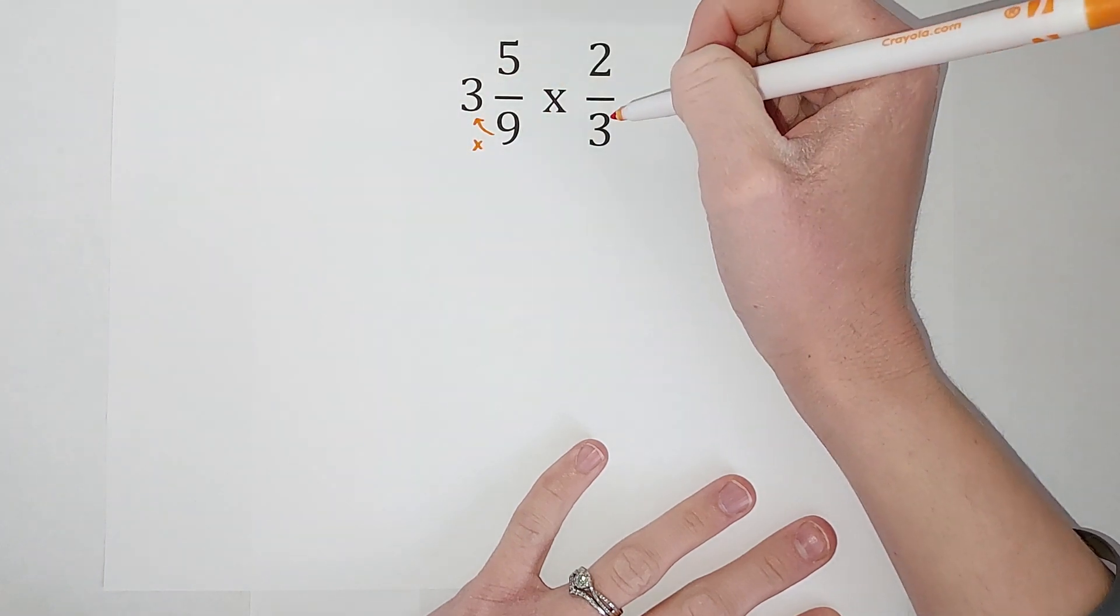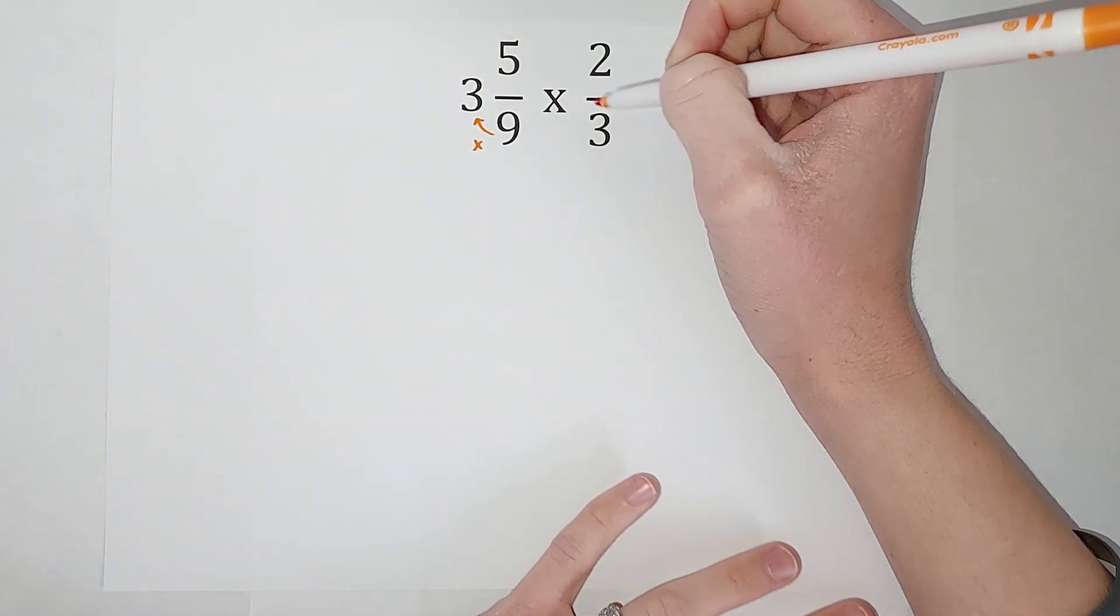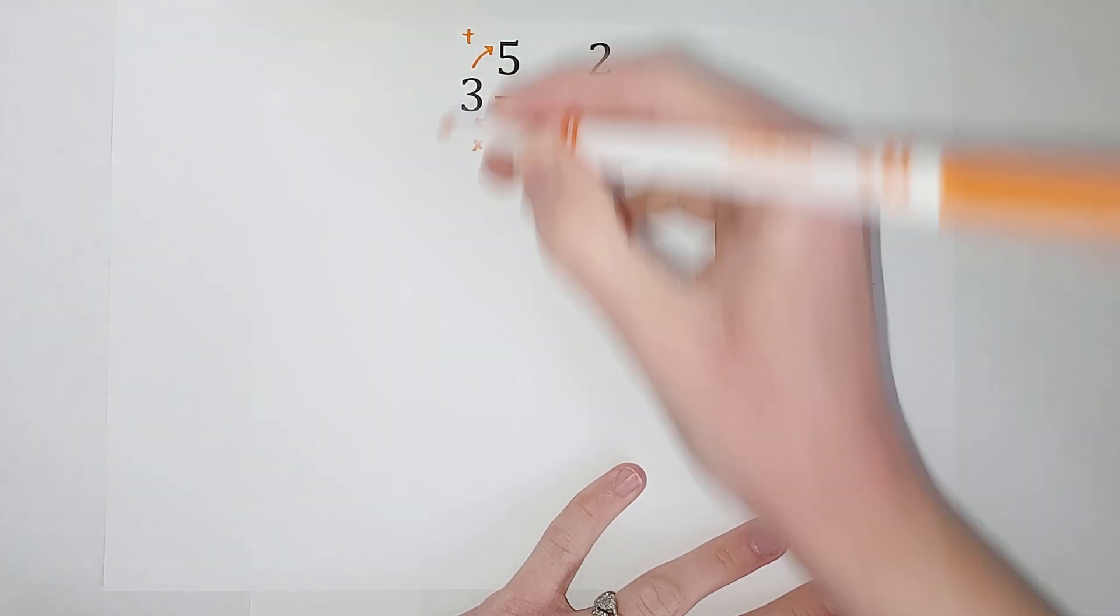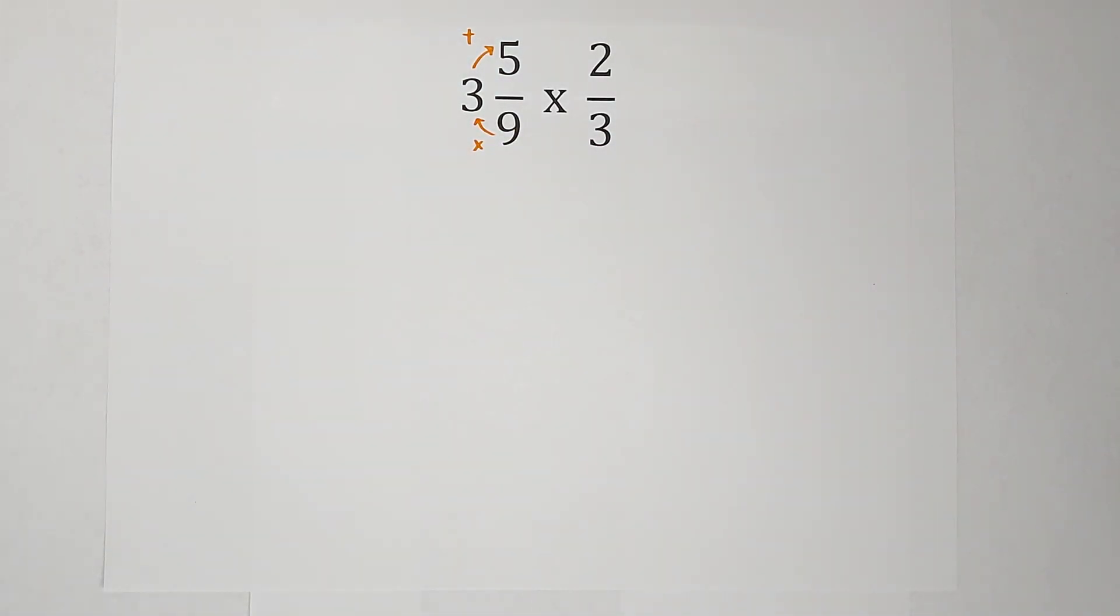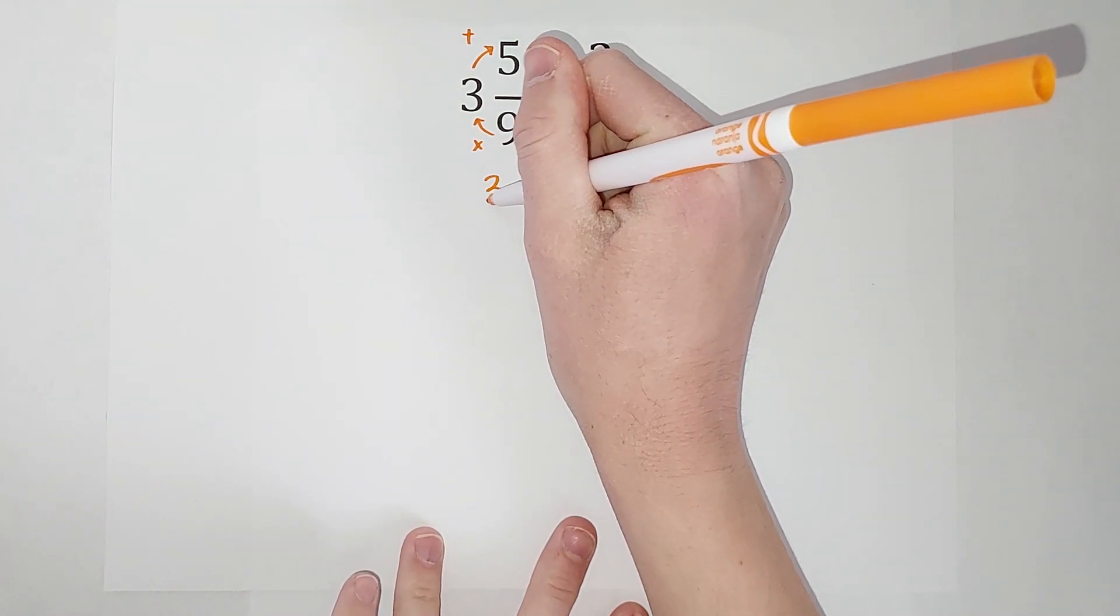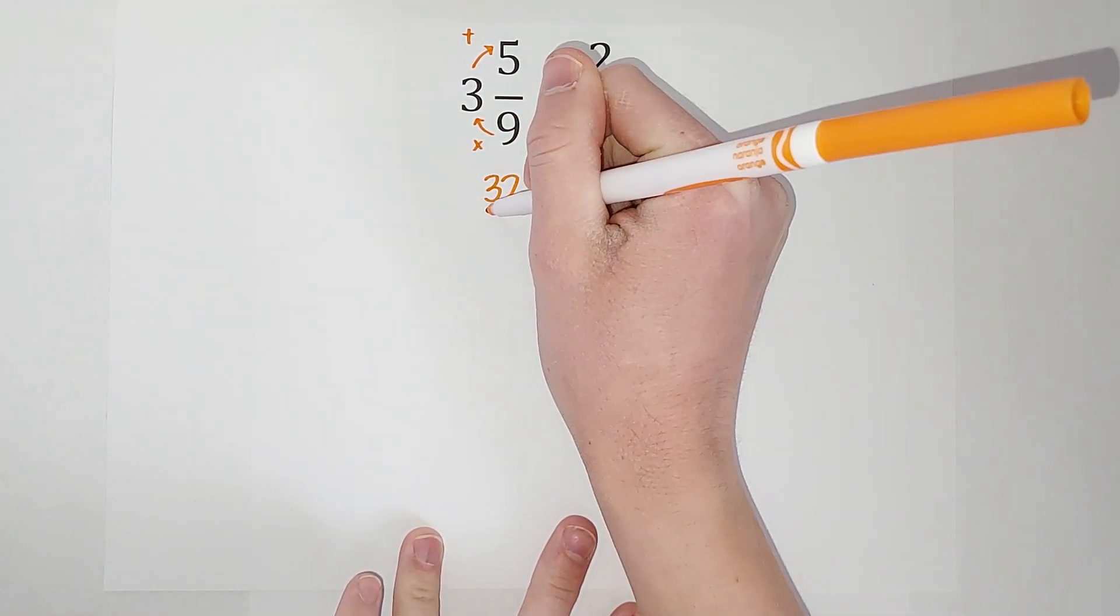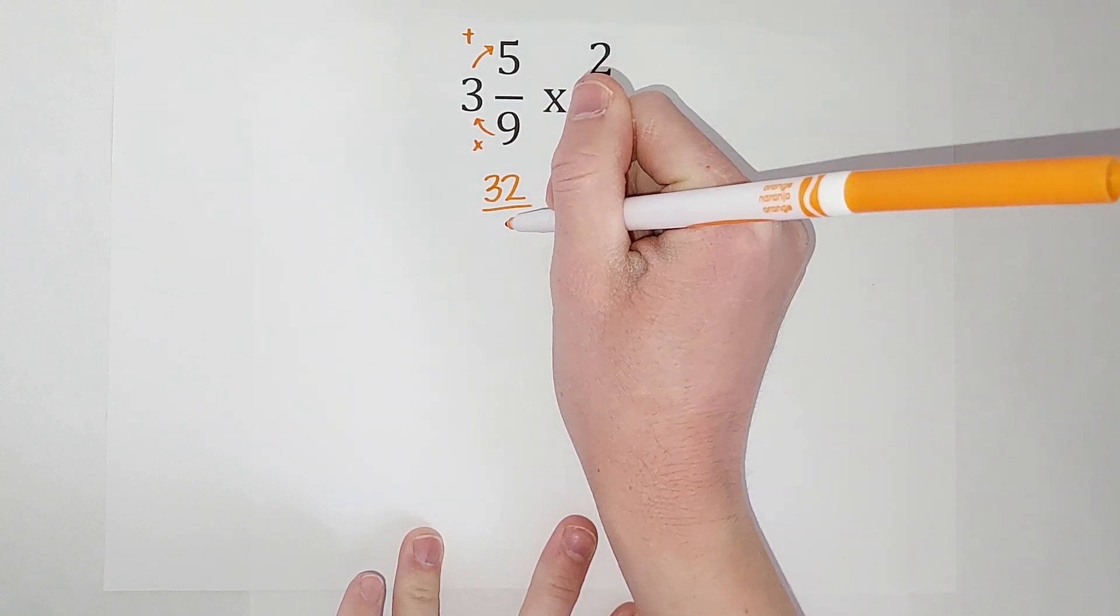So 9 times 3 gives me 27, and then we add our numerator. So 27 plus 5 gives me 32. That is the numerator of my improper fraction; my denominator is still 9.